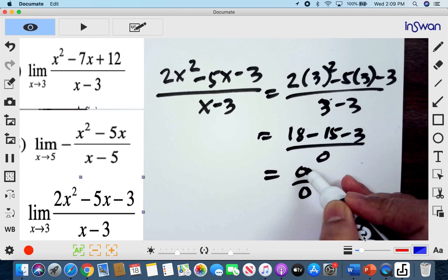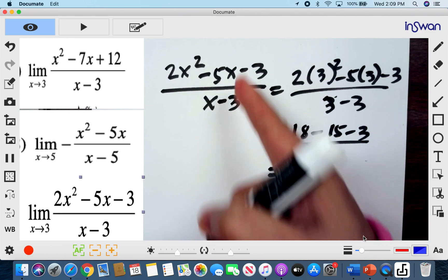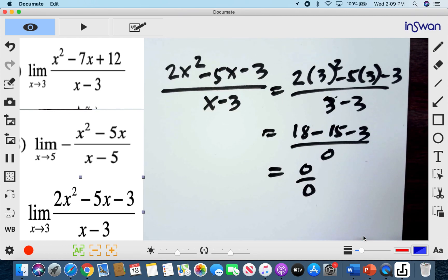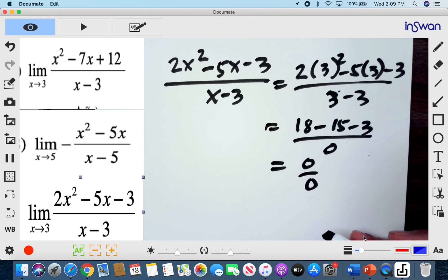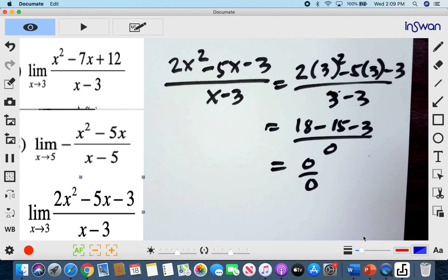Now remember, even if I have a number here, let's say I have 10 over 0, that's undefined. You still need to simplify your expression in order for you to find a limit. Now it's also possible that your function is, your limit is undefined. When your limit is undefined after you have simplified your expression, then the limit is not existing.